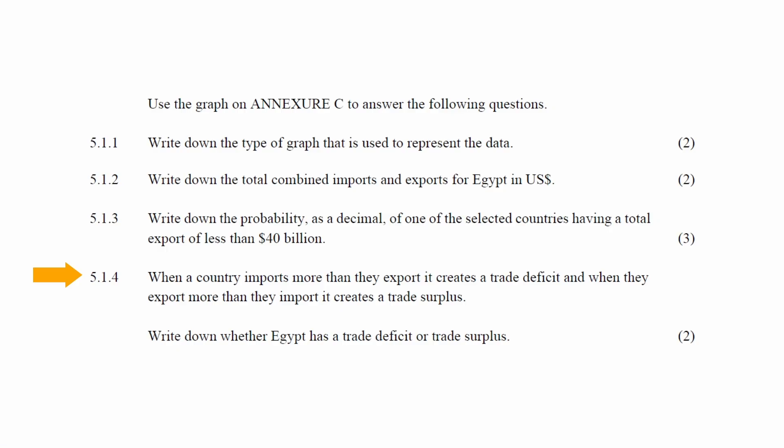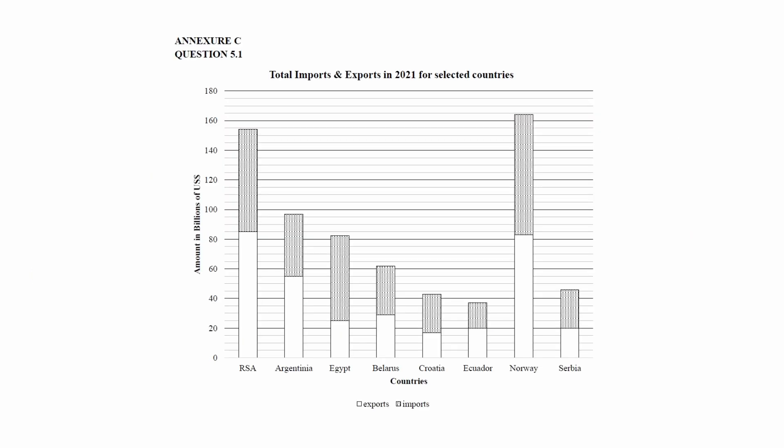In Question 5.1.4, it is stated that when a country imports more than it exports, it creates a trade deficit, and when they export more than they import, it creates a trade surplus. You have to write down whether Egypt has a trade deficit or a trade surplus. From the graph, we see that Egypt imports more than it exports, so Egypt is in a trade deficit.